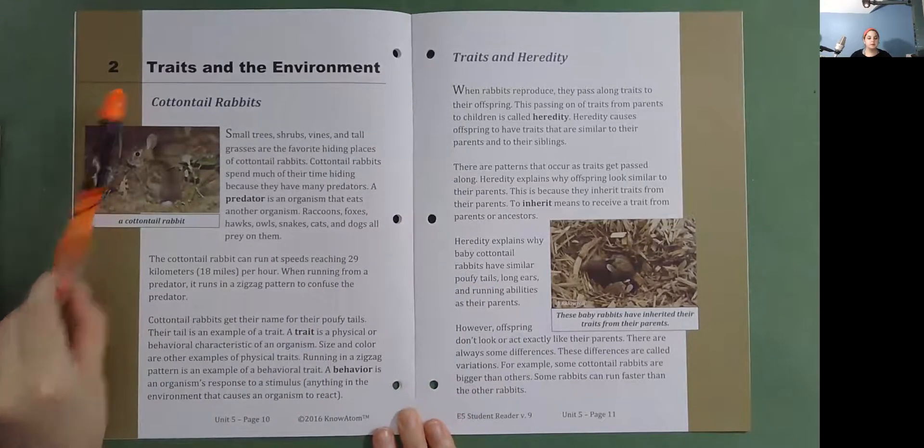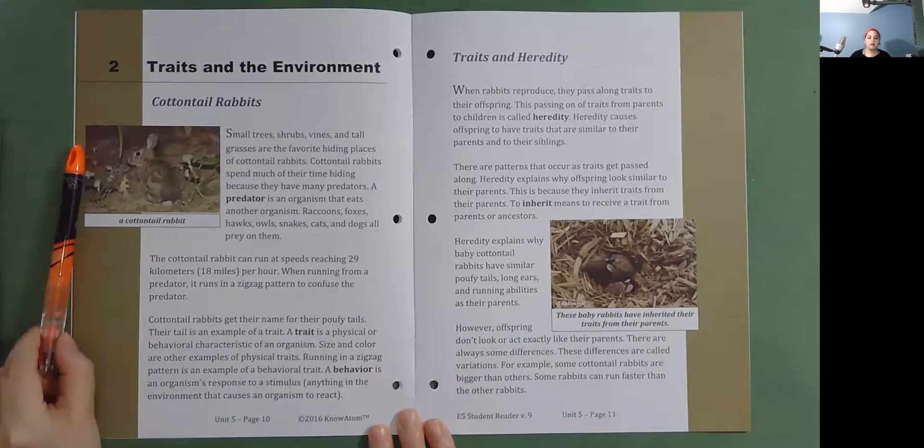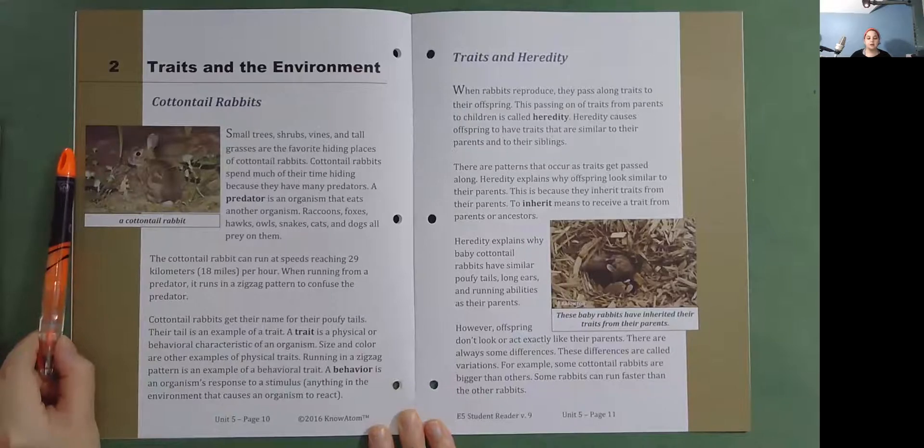Traits and the Environment: Cottontail Rabbits. Small trees, shrubs, vines, and tall grasses are the favorite hiding places of cottontail rabbits. Cottontail rabbits spend much of their time hiding because they have many predators. A predator is an organism that eats another organism. Raccoons, foxes, hawks, owls, snakes, cats, and dogs all prey on them.